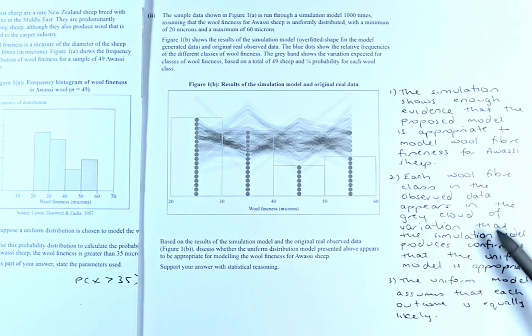This answer is mostly from the marking schedule, so if you can follow me through, you will be able to get excellent. So you can see that the simulation shows enough evidence that the proposed model is appropriate to model wool fiber fineness for awasi shape.